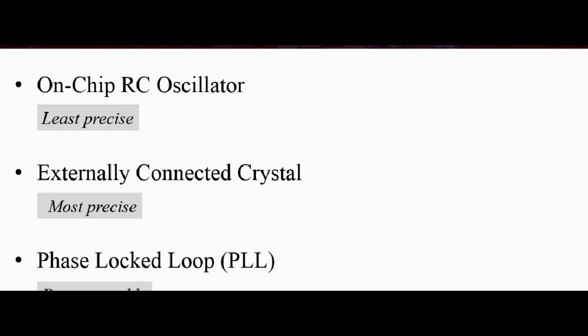you can connect an external crystal to the microcontroller and this gives more precision than the on-chip RC oscillator. And thirdly, we have the PLL. This is known as the phase locked loop and this allows us to actually program the clock. The PLL is a module that sort of takes an input clock and then reconfigures it to bring out an output clock or output frequency that is higher or lower than the input based on the circuitry of the PLL.